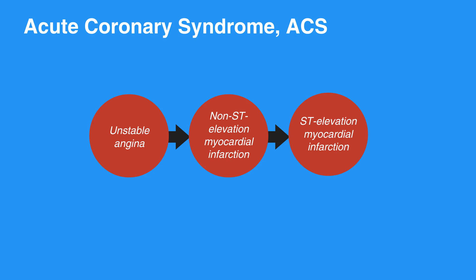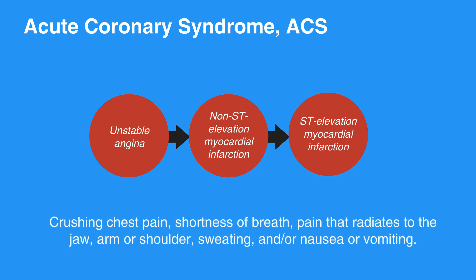ACS is classically recognized by one or more of these symptoms: crushing chest pain, shortness of breath, pain that radiates to the jaw, arm, or shoulder, sweating, and/or nausea or vomiting.